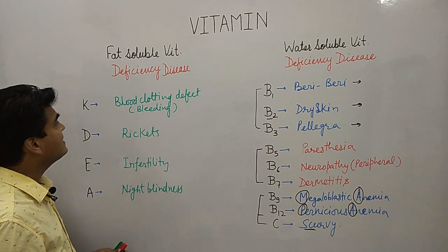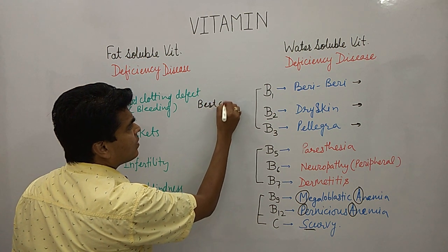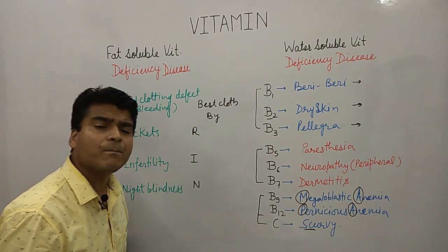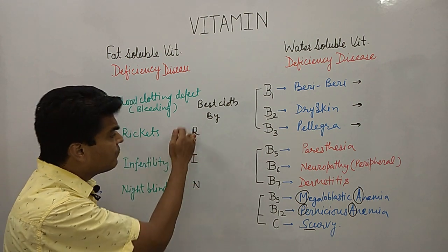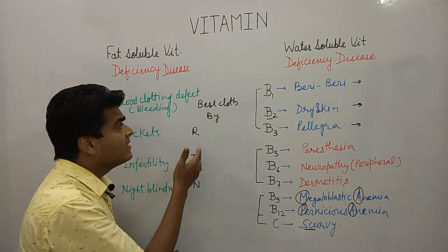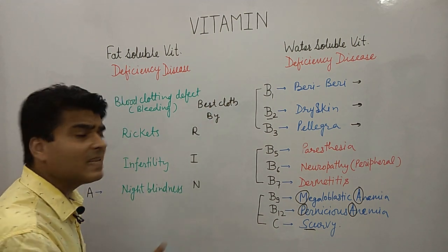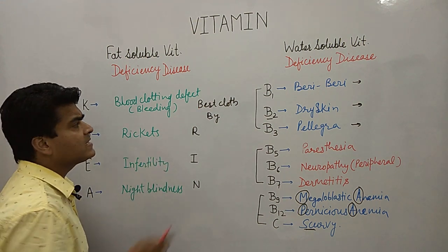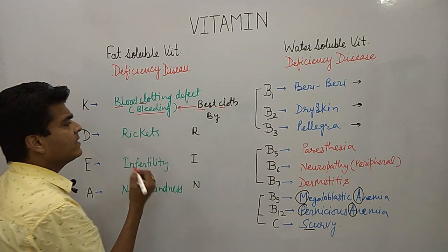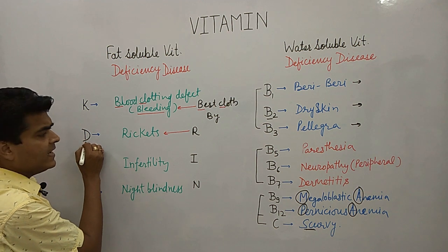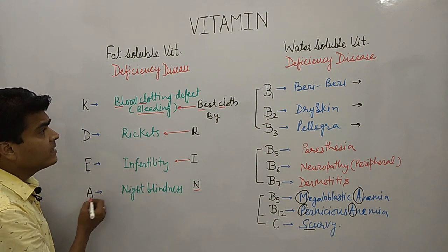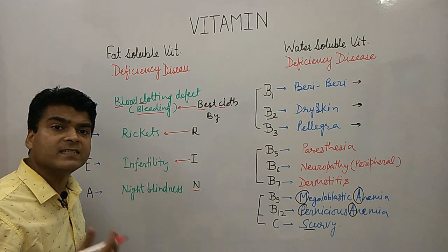The trick to remember these is: 'Best Cloth by Rin.' Rin is a well-known detergent brand in India — if you wash cloth by Rin, you get the best cloth. So: B and C stands for blood clotting defect, R for rickets by Vitamin D, I for infertility by Vitamin E, and N for night blindness by Vitamin A. This is an easy way to remember fat-soluble vitamin deficiency disorders.